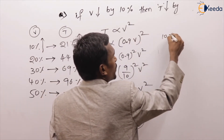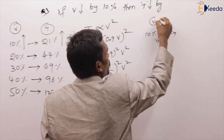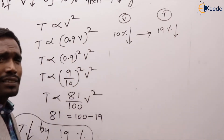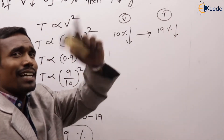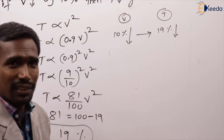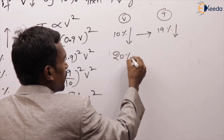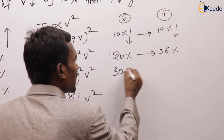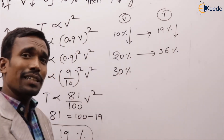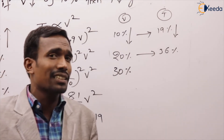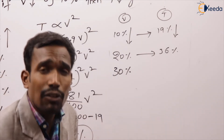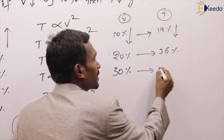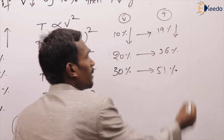If voltage reduced by 10%, torque reduced by 19% because 9 squared = 81. If voltage reduced by 20%, the answer is 36%. If voltage reduced by 30%, the factor is 0.7, so 7 squared = 49, which is 100 minus 51 — torque reduced by 51%.